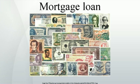In practice, many variants are possible and common worldwide and within each country. Lenders provide funds against property to earn interest income, and generally borrow these funds themselves, e.g., by taking deposits or issuing bonds. The price at which the lenders borrow money therefore affects the cost of borrowing. Lenders may also, in many countries, sell the mortgage loan to other parties who are interested in receiving the stream of cash payments from the borrower, often in the form of a security, by means of a securitization.